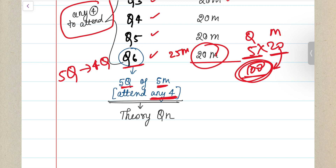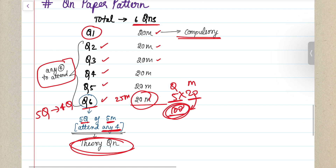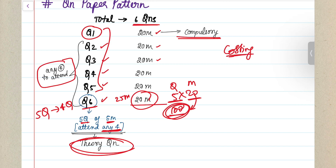Question Number 6 is going to be your completely theory-based question. If you want, you can keep your costing paper as a completely practical paper and attend Questions 1 through 5. Don't spend too much time on theory because you don't know from where it will be questioned. Treat it as a practical paper, attend the first five questions, and give it your hundred percent.